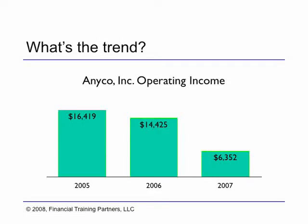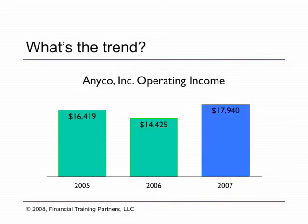Using adjusted operating income changes our view of the trend in NECO's operating results. Without the restructuring charge, operating income is much higher in 2007, and the trend changes from downward to upward. NECO's real earning power isn't just higher — it's also improving.